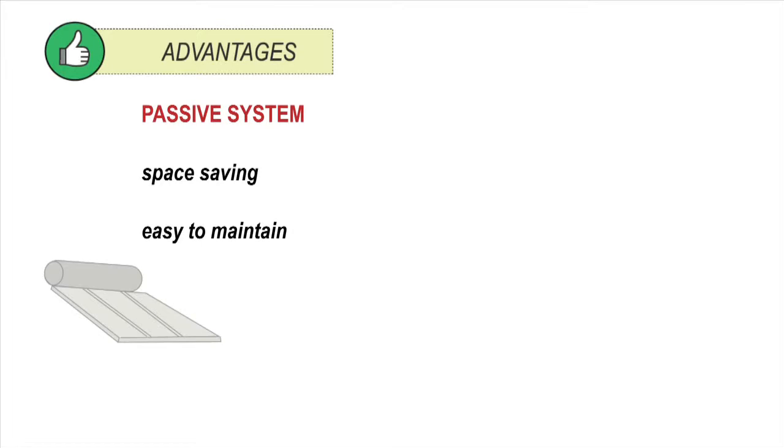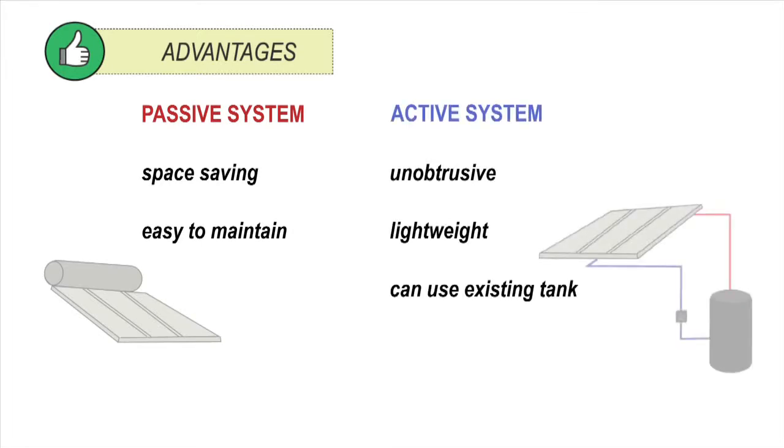Each type of system has advantages. A passive system is space-saving and is easy to maintain with no moving parts. An active system is unobtrusive, lightweight, can use an existing tank and the tank can be located closer to where hot water is used, reducing heating loss in pipes. But the pump uses some energy.